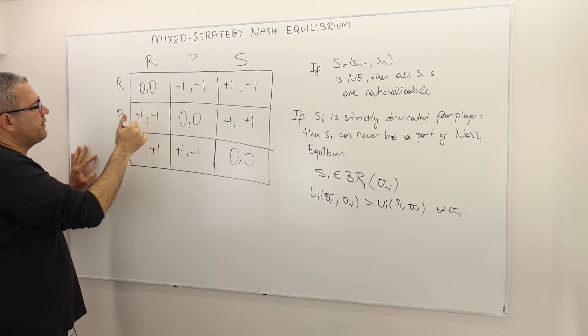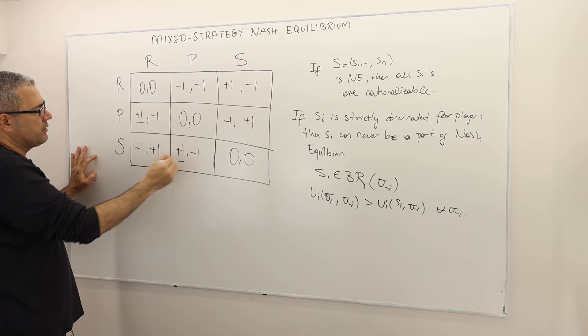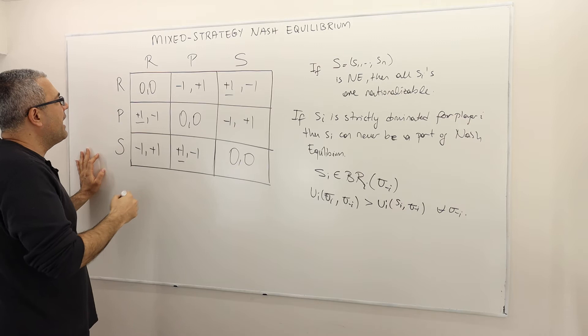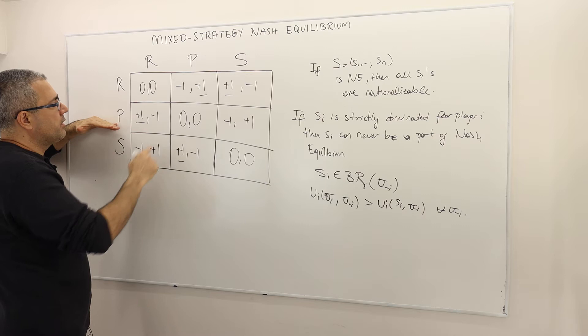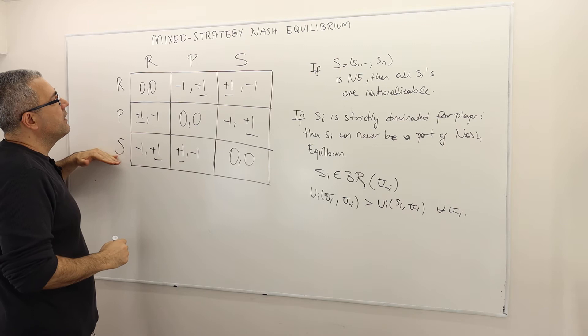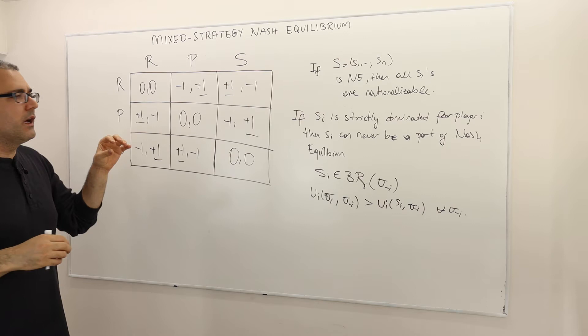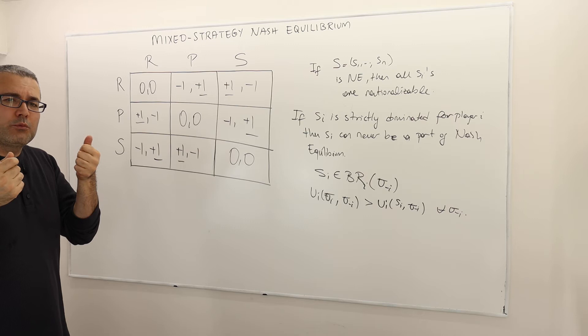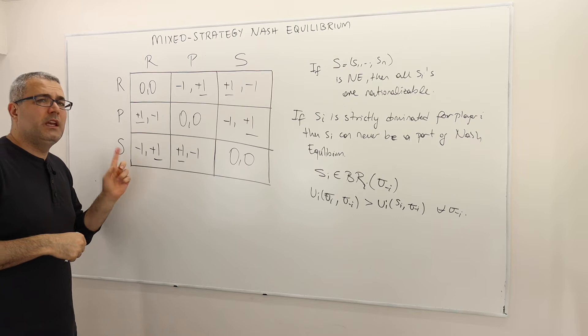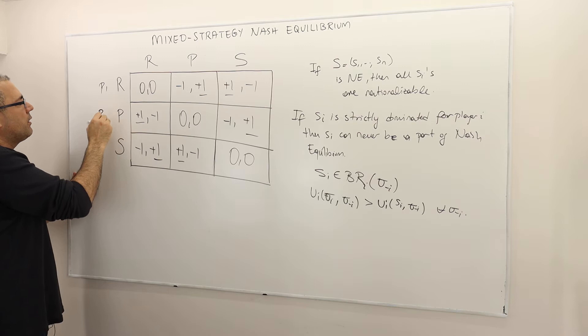Why is that? If player two plays rock, the best response is paper. If player two plays paper, the best response is scissors. If player two plays scissors, the best response is rock. And if player one plays rock, the best response is paper; if paper, the best response is scissors; if scissors, the best response is rock. There is no payoff tuple where I can underline both, meaning no strategy profile where both players are best responding to each other — hence no Nash equilibrium in pure strategies.